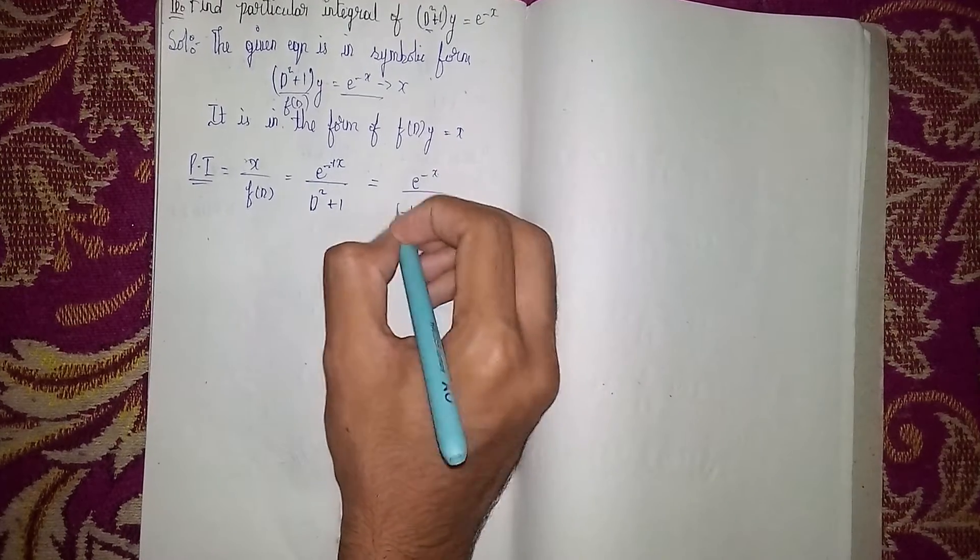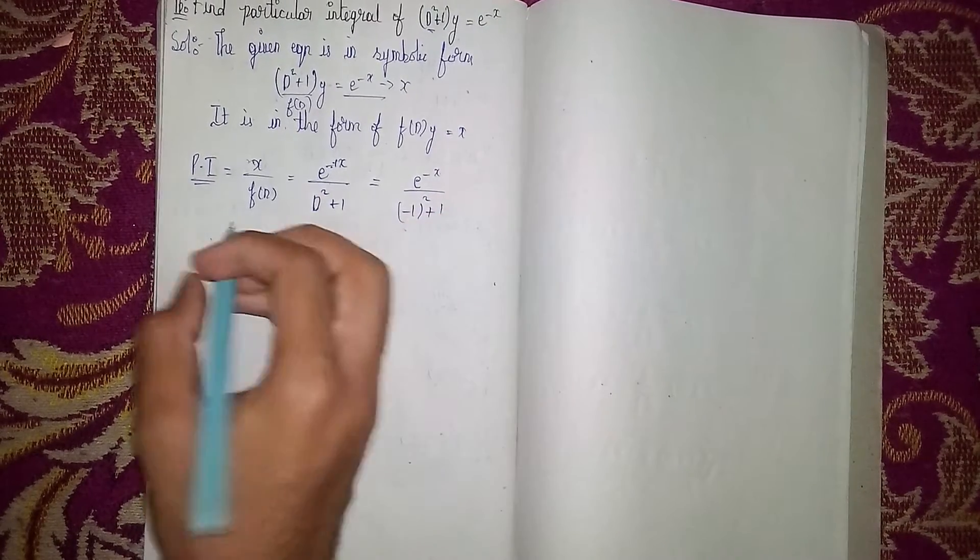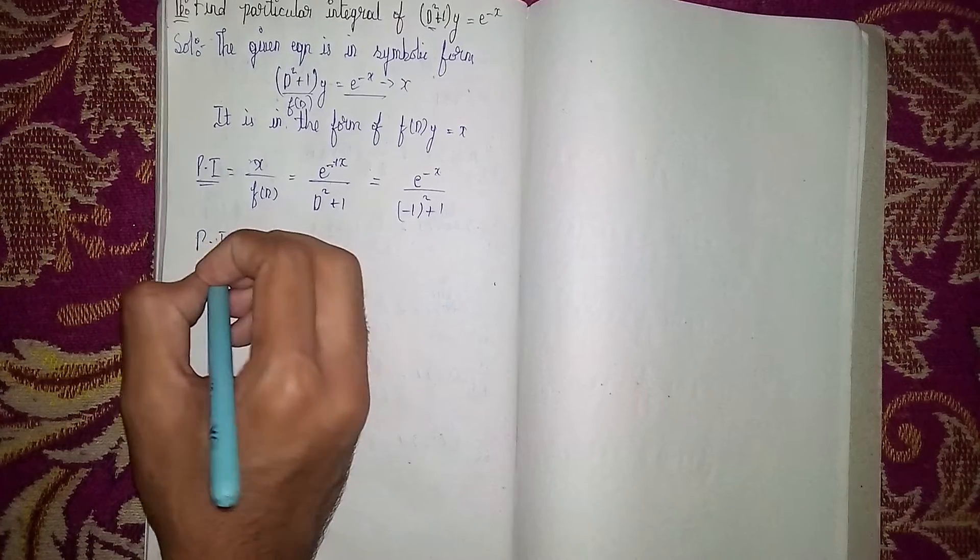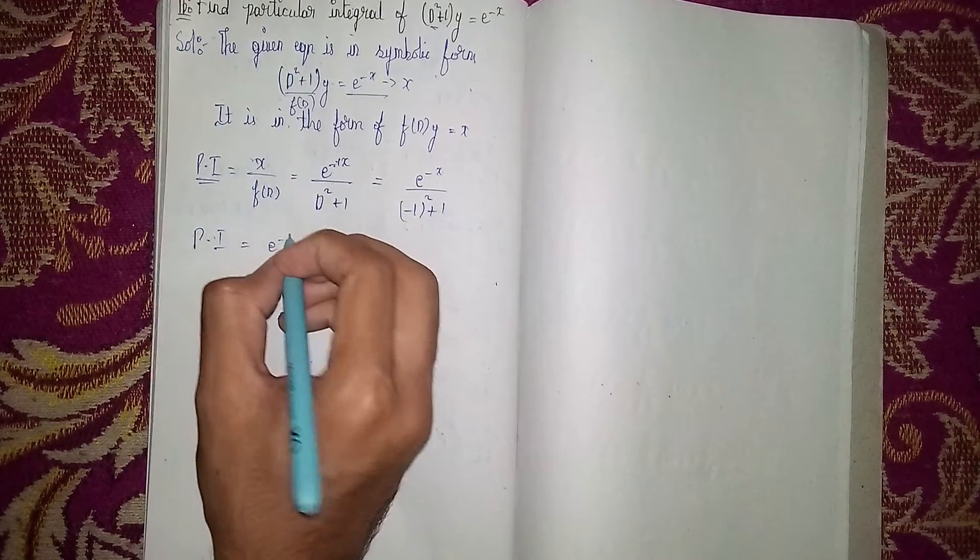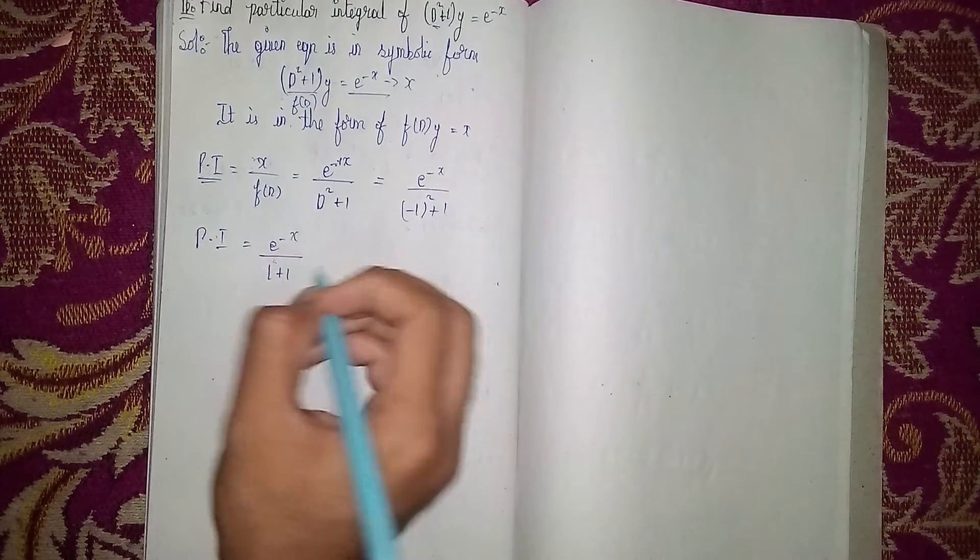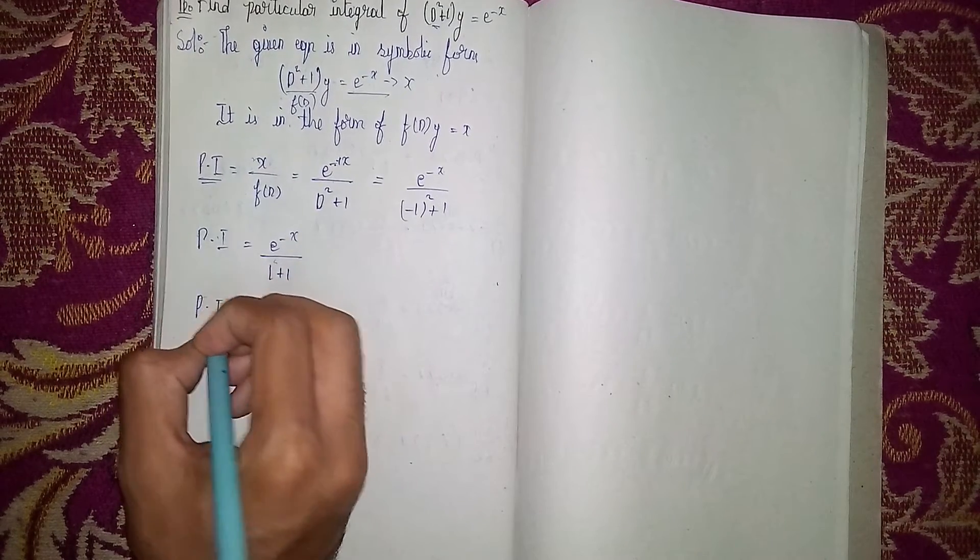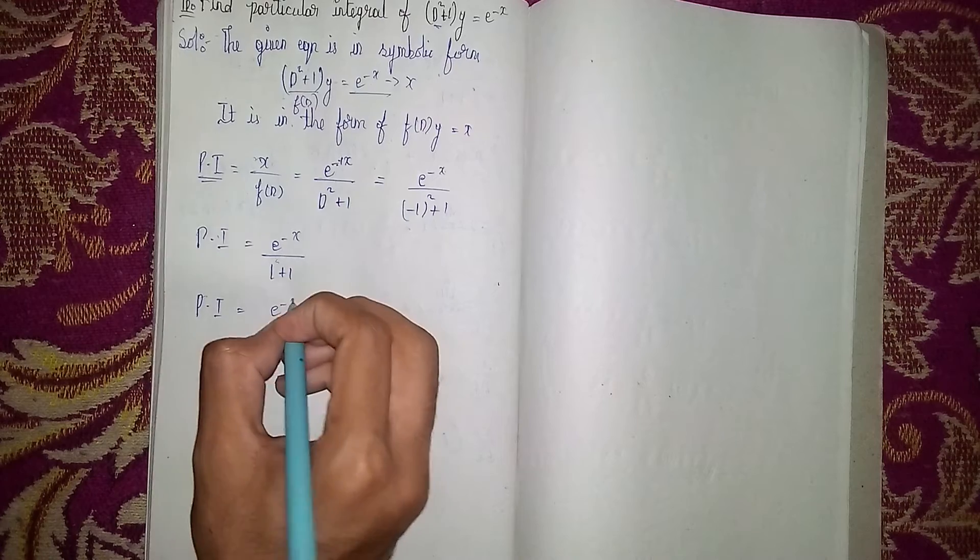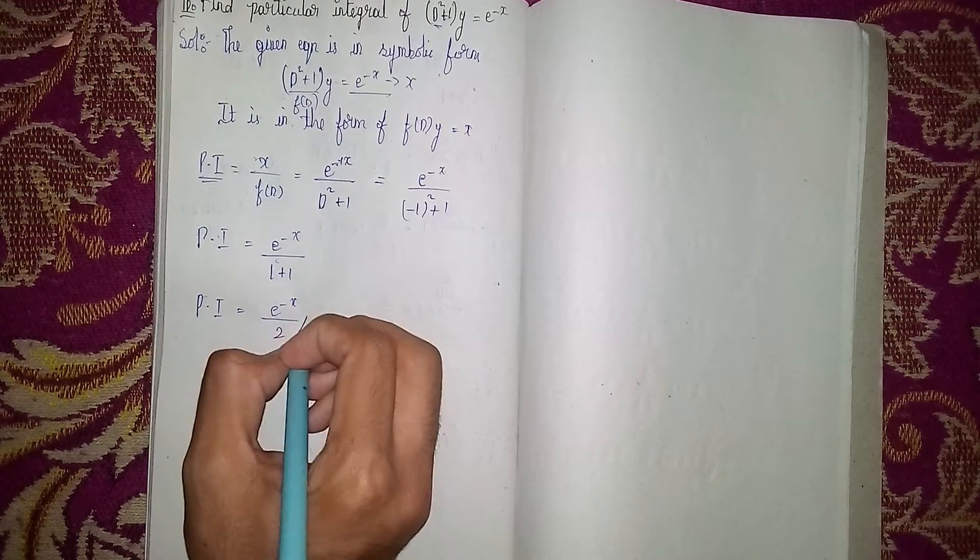So our particular integral equals e^(-x)/(1 + 1). Therefore, PI = e^(-x)/2. This is our particular integral.